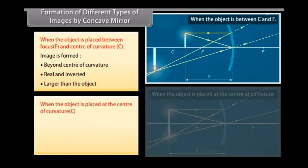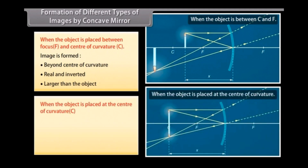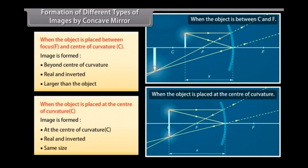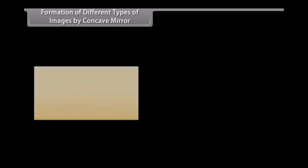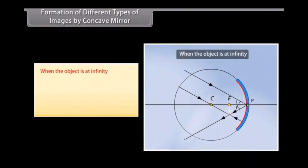When the object is placed at the center of curvature C, the image is formed at the center of curvature C — real and inverted, and the same size. When the object is at infinity, the image is formed at the focus — real and inverted, and smaller than the object.